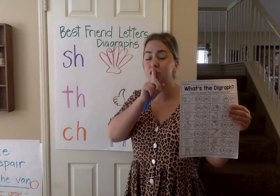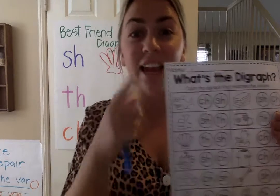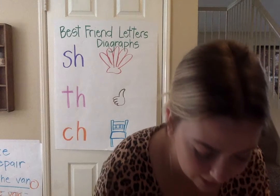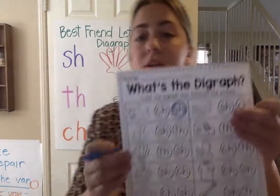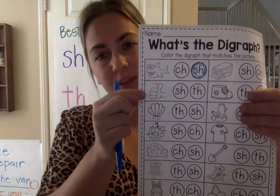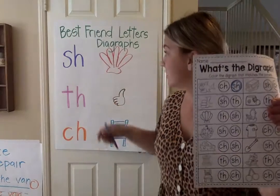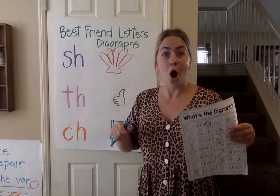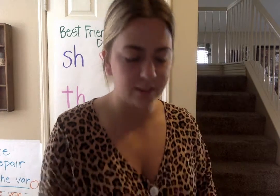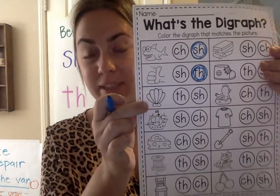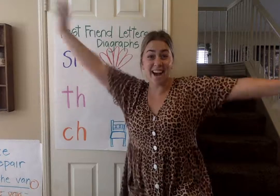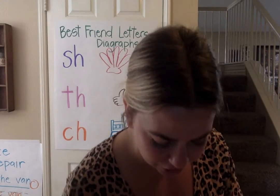Let's do the first one. This is a picture of a shark. Shark — does it start with 'shh'? Yes! It's the S and H. Good job! So we're going to fill in the S and H and move on. The next one is pointing to our thumb. Does 'thumb' start with 'shh'? No. Does it start with 'th'? It does — it was our example! So color in the T and H. You guys are rock stars!